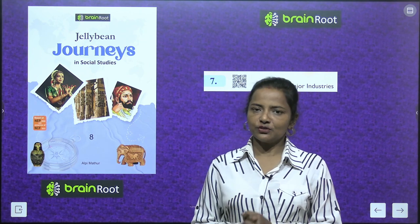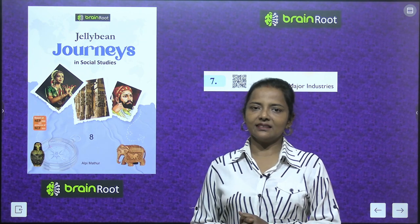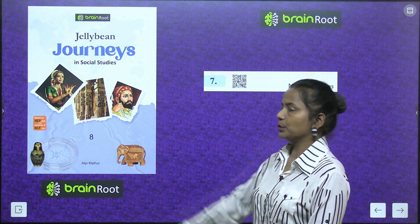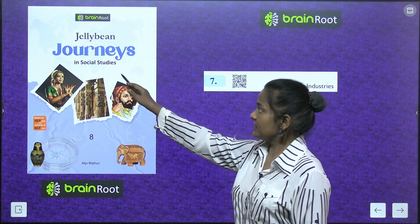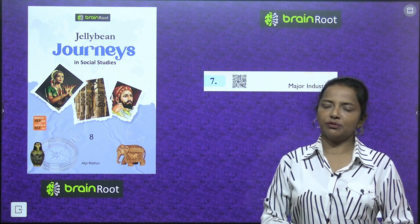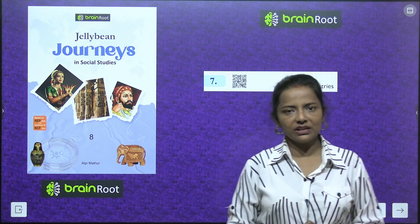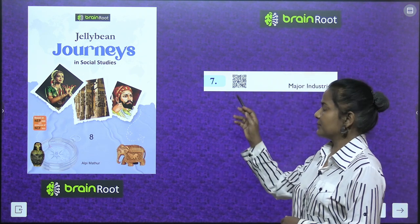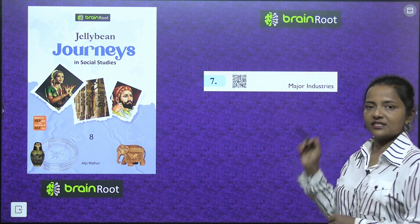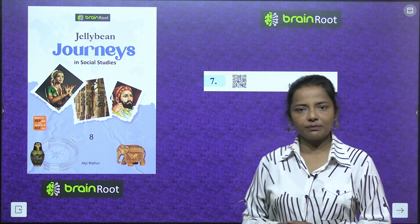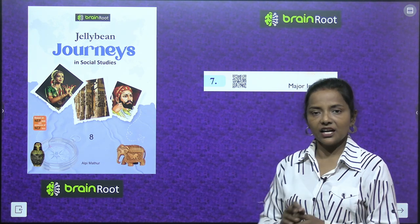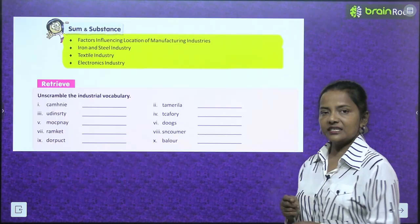Welcome back children to your social studies class. This is your learning buddy Aparajita and let's start the book Jellybean Journeys in Social Studies class 8 by Brainroot series. Today we will do chapter number 7, that is Major Industries.